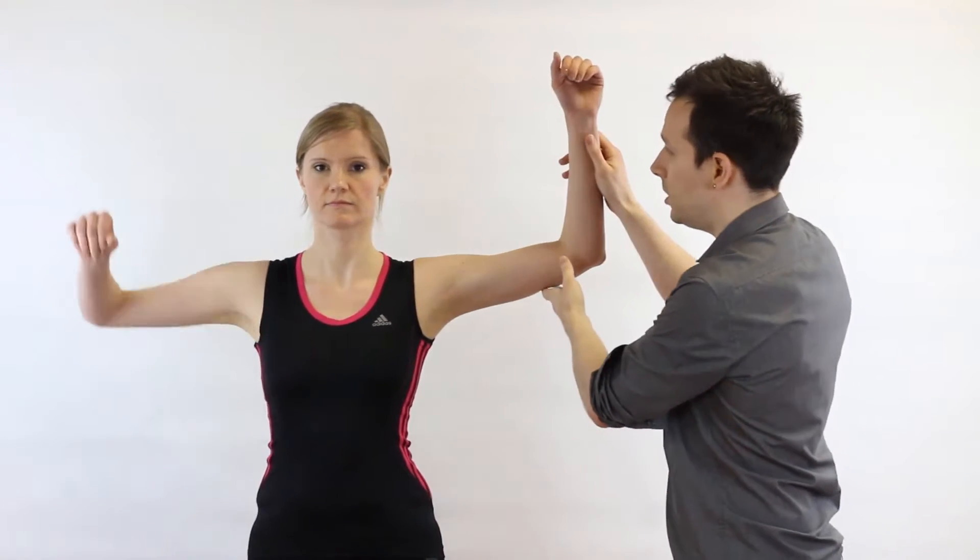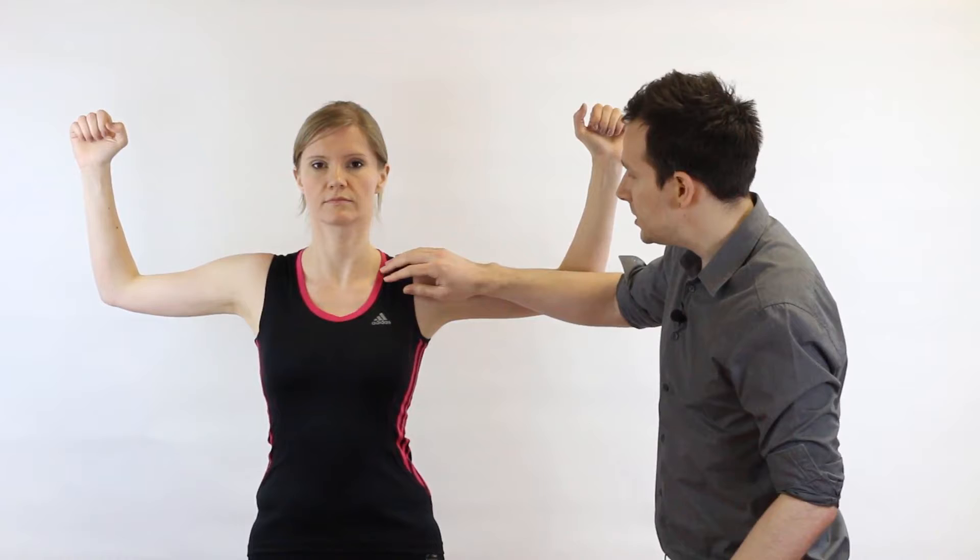So the position for this test is we want both patient arms up into this sort of military press position. So we want flexion, horizontal abduction, and external rotation. So if we can get Polly to do that now, we're going to do that on both sides. Now we want the elbows to go slightly further back from the frontal plane and the point of this position is to get some compression in and around here.